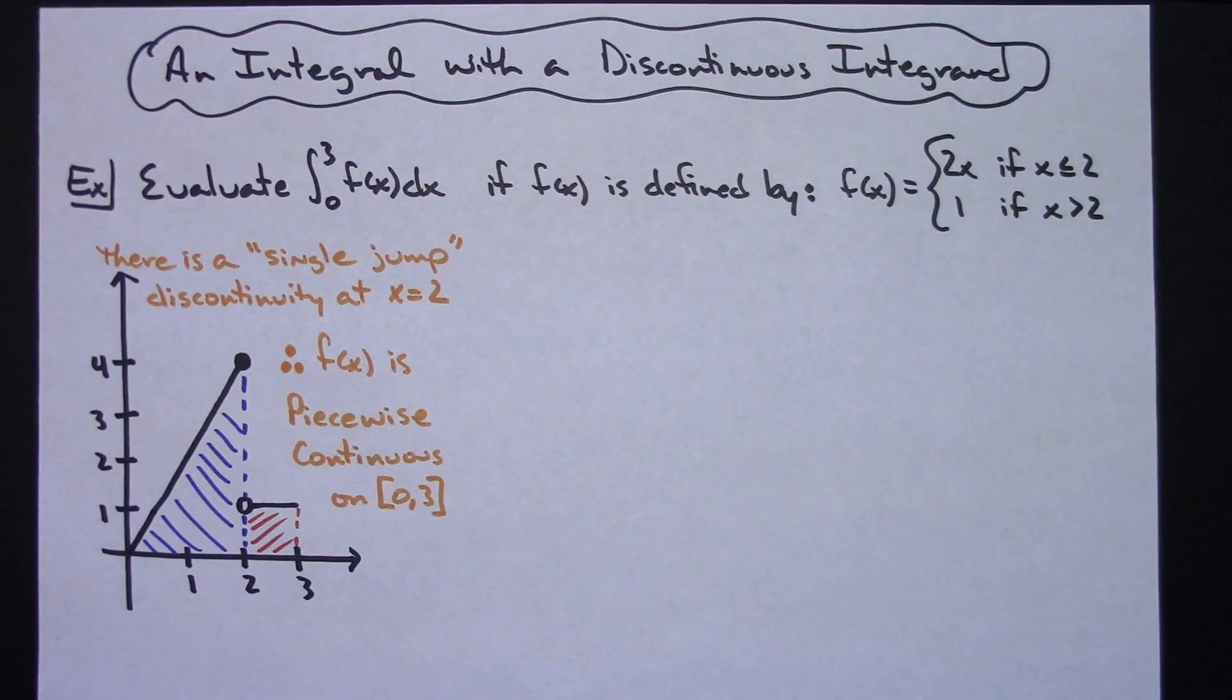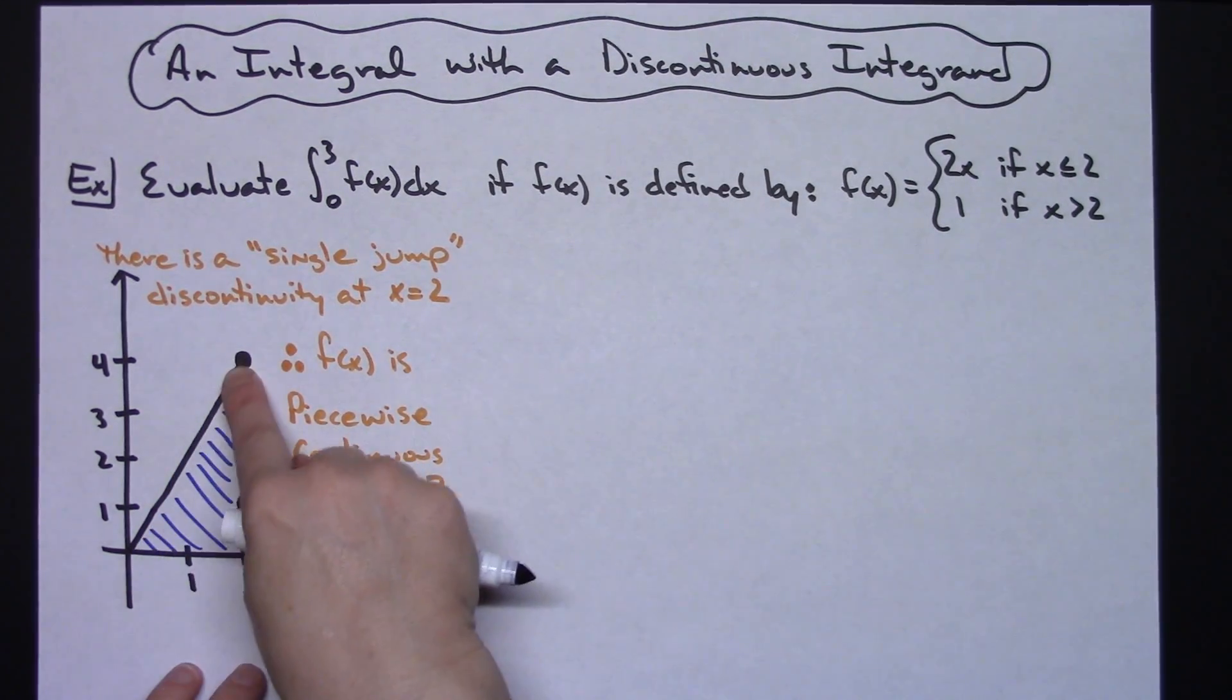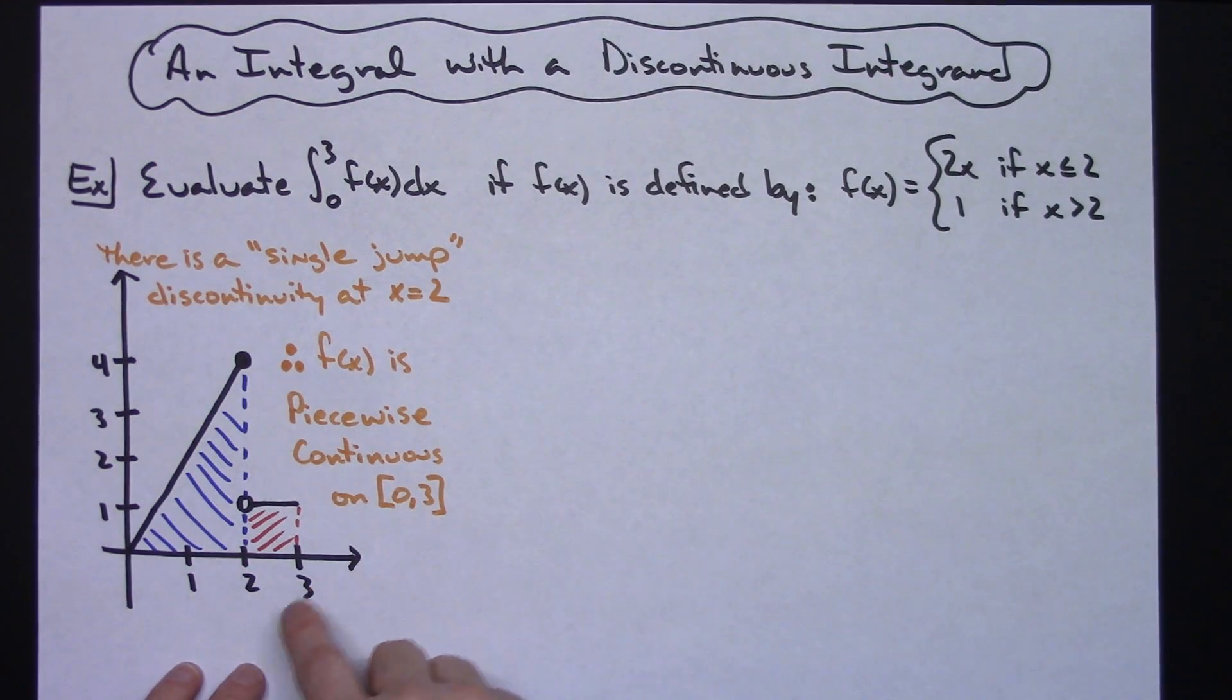And what that's going to do is allow us to easily integrate this using basic geometric shapes. I'm going to be able to integrate from 0 to 3 using a right triangle here and that geometric formula, 1 half base times height, and then adding that to whatever I get when I integrate from 2 to 3 using a simple square here, which would be side squared.